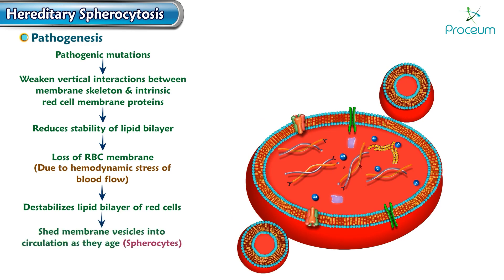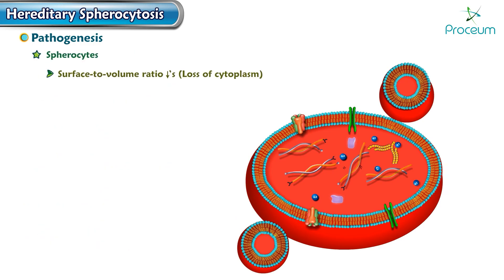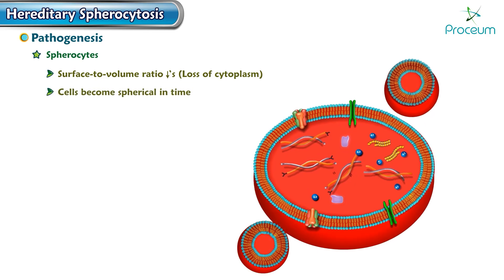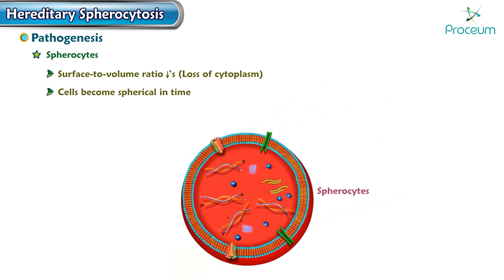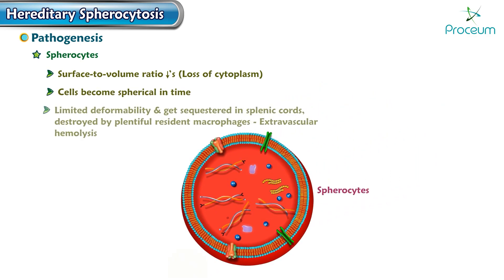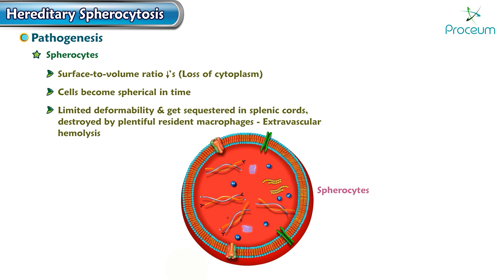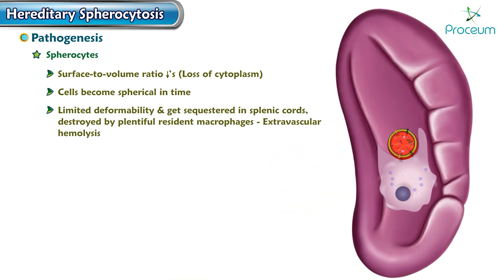Hence, the surface-to-volume ratio decreases progressively because of loss of cytoplasm in the process. With a progressive decrease in the surface-to-volume ratio, the cells become spherical over time. These spherical cells are termed spherocytes.